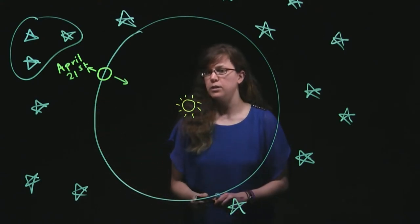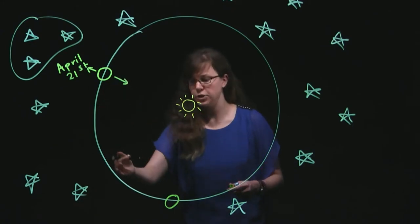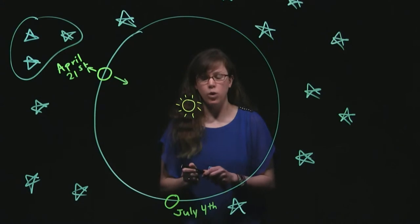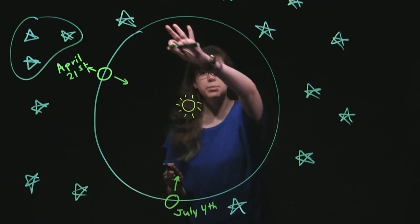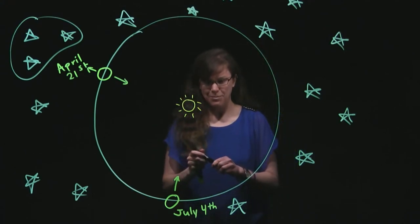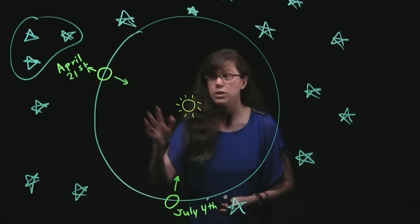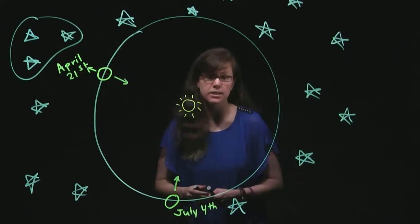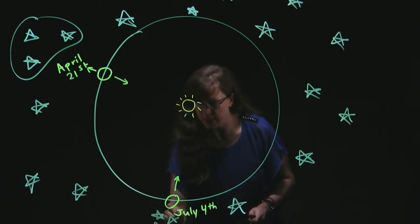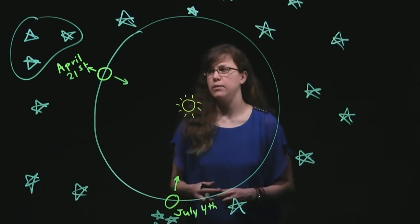As we continue on through the sky and eventually get to a couple of months later — April, May, June, July — maybe it's July 4th, and we're going to have fireworks. If we were trying to look at what stars are in the direction of the Sun, they'd be a whole completely different set of stars than on April 21st. If we were looking at the nighttime sky and looking at the stars, it would be a different set of stars than the ones we saw high at midnight on April 21st.